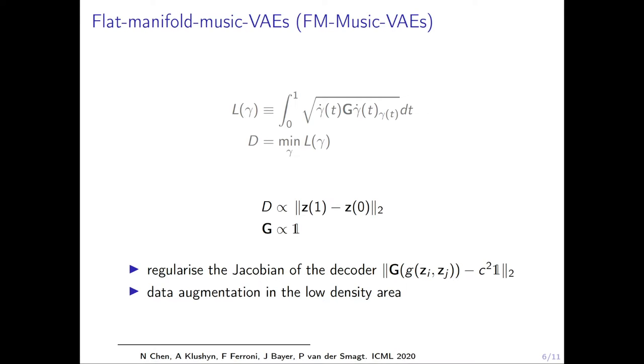Note that we cannot ignore the low density area if we want to have distance preserving for the whole latent space. However, because of the limitation of the training data, we always have low density area in the latent space. We use a method, which is called mixup, to augment the data in the latent space. The method is simple. We just use two data points and randomly interpolate between them. Then we get a point from there and we add it to the regularizer.